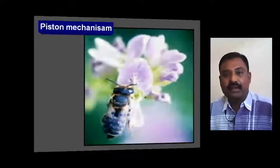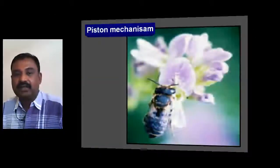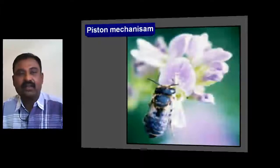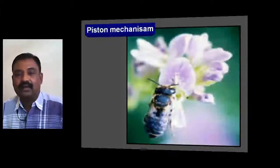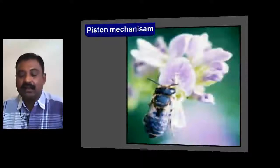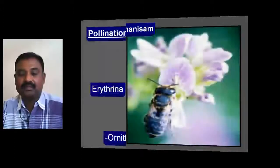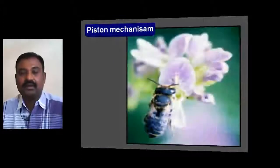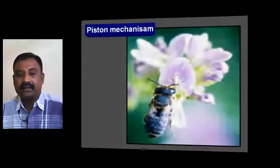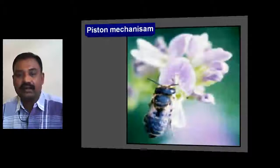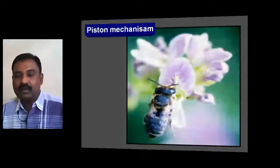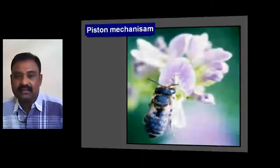In Fabaceae members, cross-pollination takes place with the help of insects through a special mechanism called the piston mechanism. In the piston mechanism, the insect is attracted by the Papilionaceous corolla. The standard petal or wing petal is very large in size, which attracts insects.